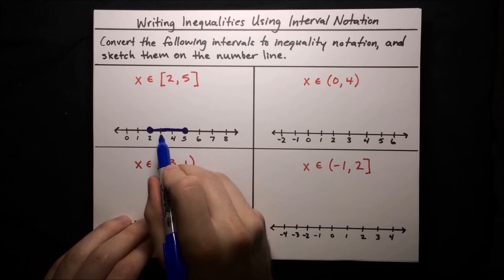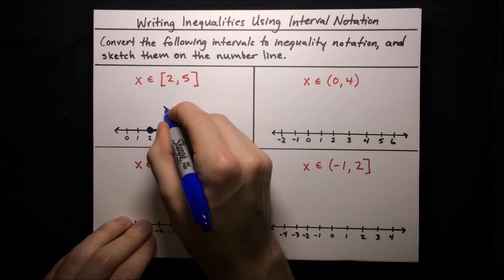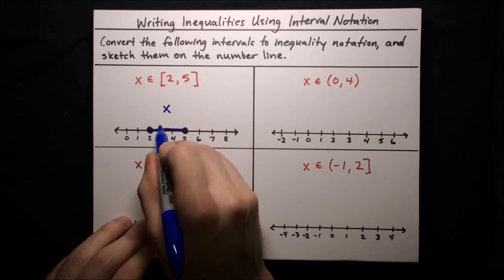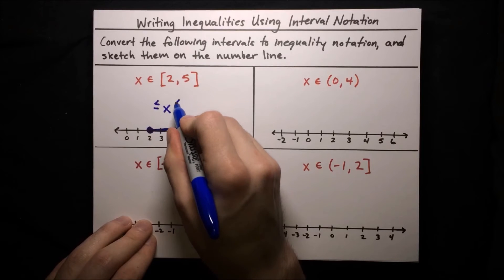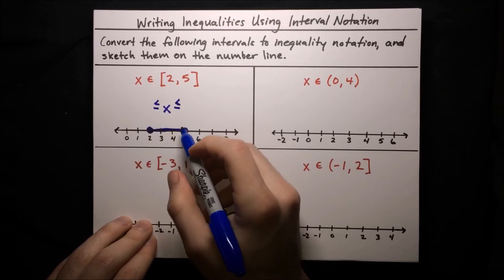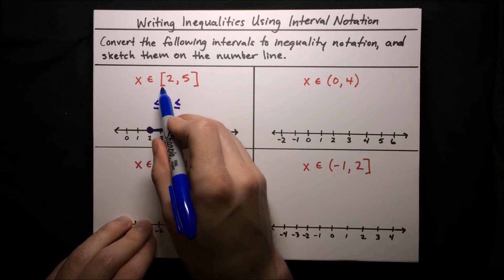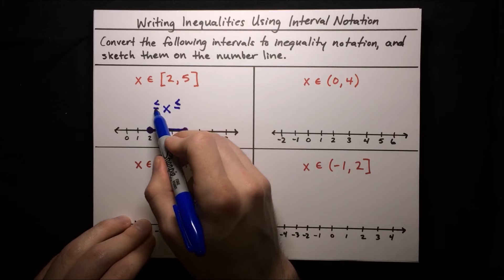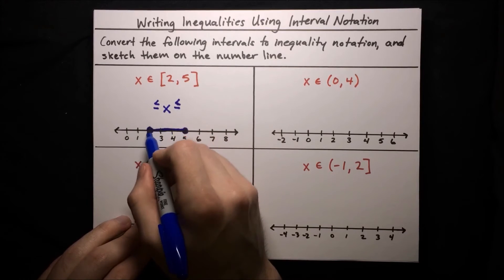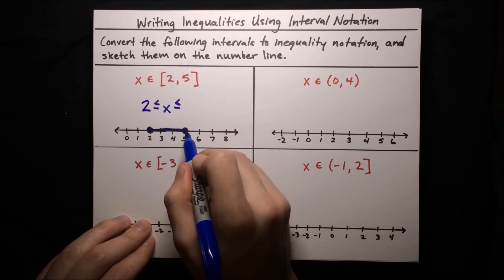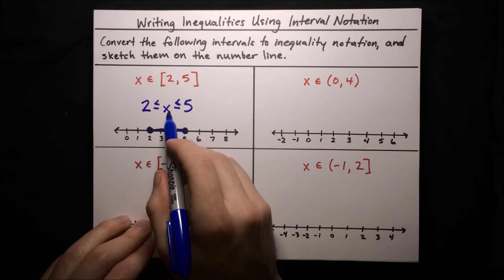To write the inequality for [2, 5], x is in the middle and must be greater than or equal to the left endpoint and less than or equal to the right endpoint. Brackets are like greater than or equal to or less than or equal to. The left endpoint is 2 and the right endpoint is 5, so the inequality is 2 ≤ x ≤ 5.